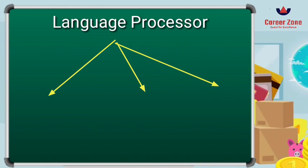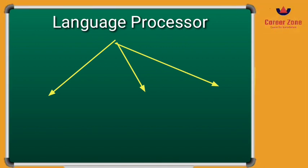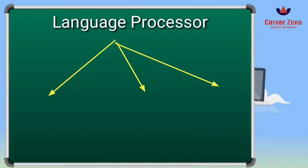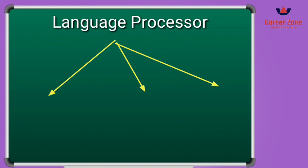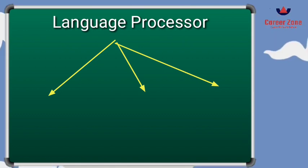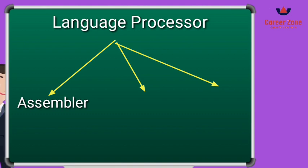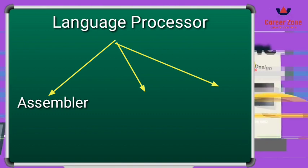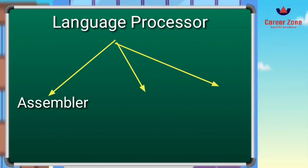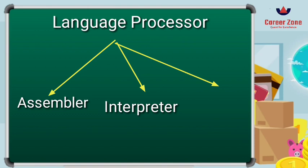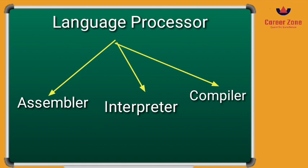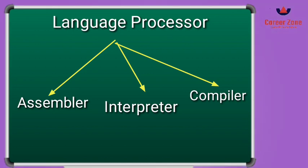The last topic is language processors. We understand and write instructions in high-level language, however computers only understand binary machine-level language — zeros and ones. Language processors inside the computer convert our high-level language to machine-level language. There are three types: the first is assembler, which converts assembly-level language to machine-level language. The second is interpreter, which converts high-level language to low-level language line by line. The third is compiler, which also converts high-level to low-level language but does it all in one go.